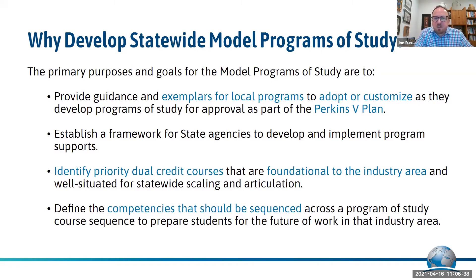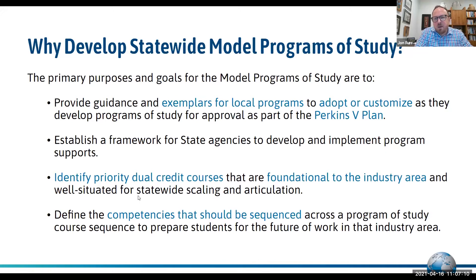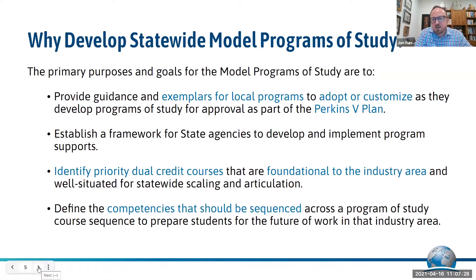We also view these models as providing a framework for state agencies looking at program supports — things like articulation, curriculum resources, and work-based learning models. And particularly for dual credit courses: the state has had a number of policy focus areas for scaling dual credit, and one key aspect of the Model Programs of Study is backwards mapping what those strategic dual credit courses need to be across different program areas. That can inform what needs to be available throughout the state and what can be articulated across various colleges.